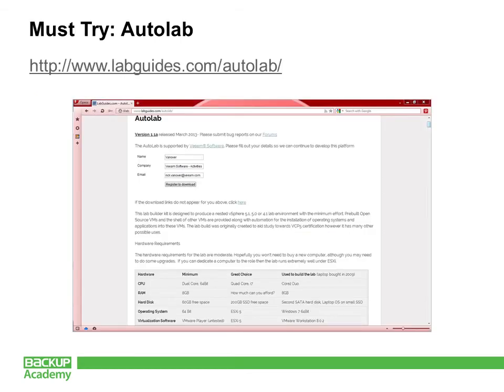Another tool you can use to prepare for your upgrade and learn new VMware features is Autolab. If you haven't heard of it, go to labguides.com/Autolab. It's a containerized version of everything you need to test ESXi, vSphere, and other technologies without needing a high-performance environment. It can even be run on many laptops — requirements start at as little as 8GB of RAM — and you can try it on a PC, a laptop, an ESXi host, or VMware Workstation. Many of these things can be done for free.